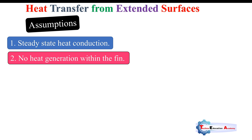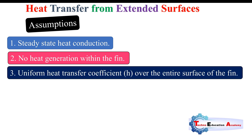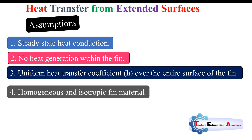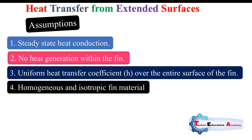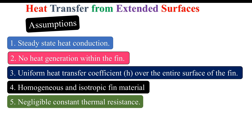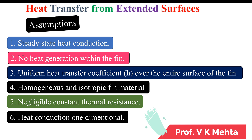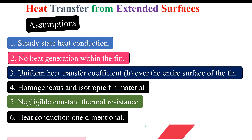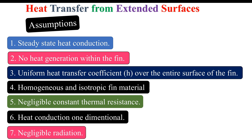The second assumption is no heat generation within the fin. The third assumption is a uniform heat transfer coefficient over the entire surface of the fin — h is constant throughout. The fourth assumption is homogeneous and isotropic fin material; isotropic means the thermal conductivity does not change and remains uniform throughout the material. The fifth assumption is negligible contact thermal resistance. The sixth assumption is that heat conduction is one-dimensional. The last assumption is negligible radiation — the effect of radiation is neglected.